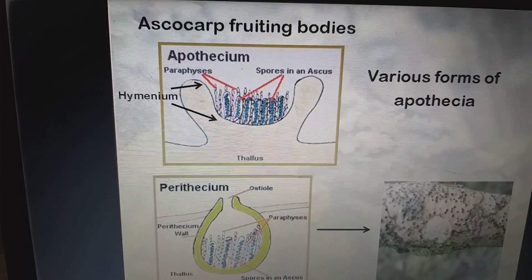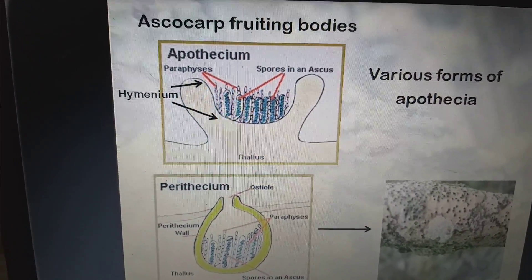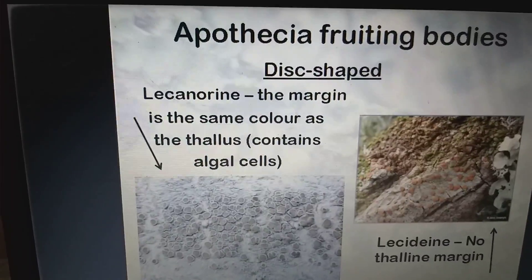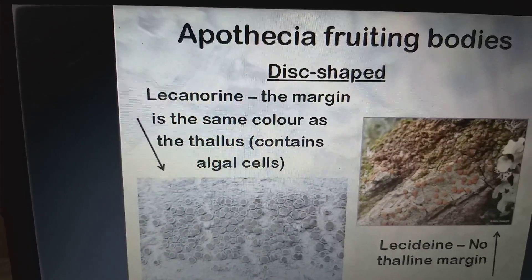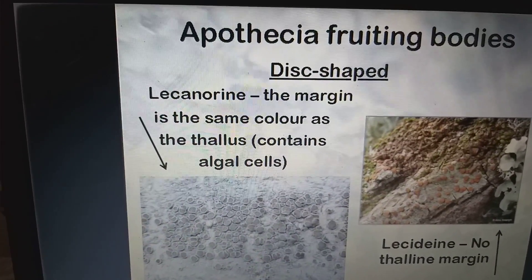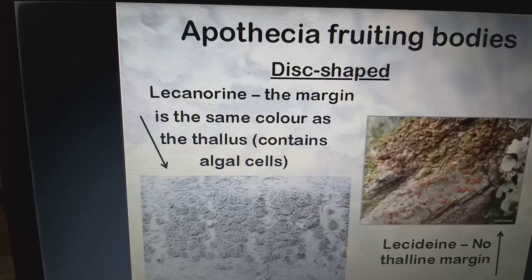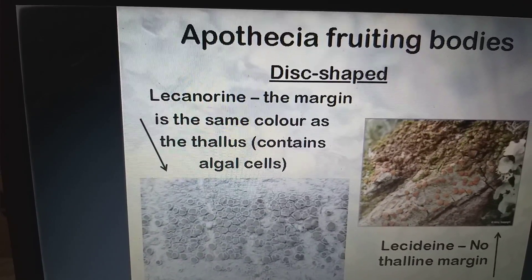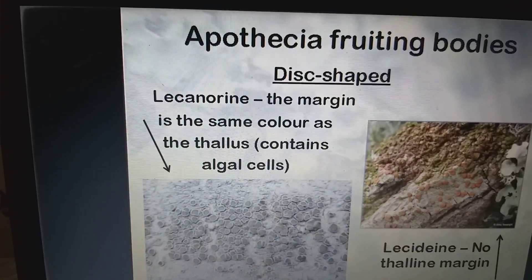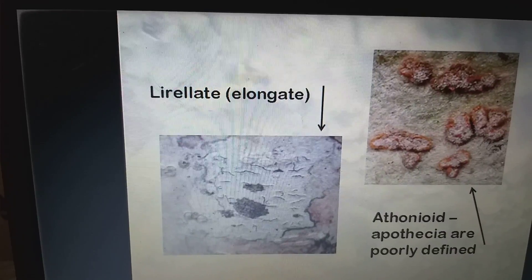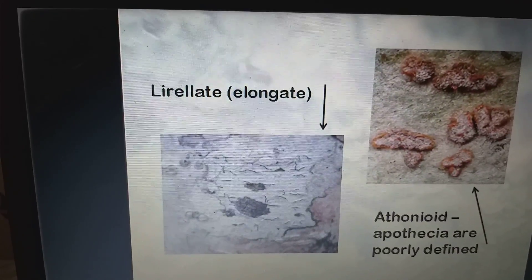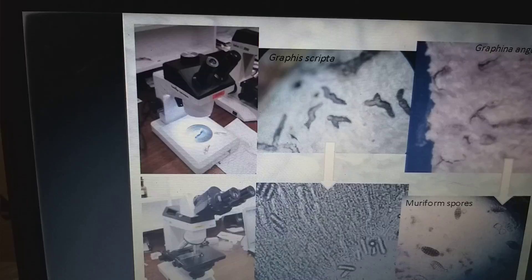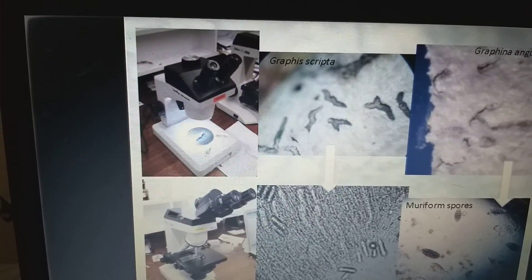The Ascomycota fruiting bodies take various forms of apothecia. The apothecia fruiting body is disc-shaped. Lecanоrine apothecia have a margin of the same color as the thallus and contain algal cells. Lirellate apothecia are an elongated version.